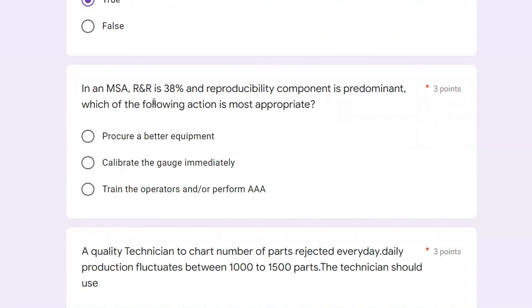In MSA, repeatability and reproducibility is 38%, and the reproducibility component is predominant. Which of the following action is most appropriate? Procure better equipment, calibrate the gauge immediately, train the operator, or perform attribute agreement analysis? The answer is train the operator, because it is reproducibility. Reproducibility means it's related to appraisal, so training is required or perform attribute agreement analysis.